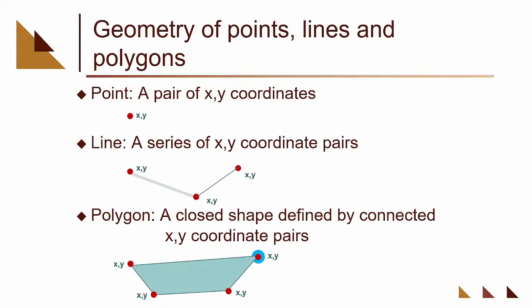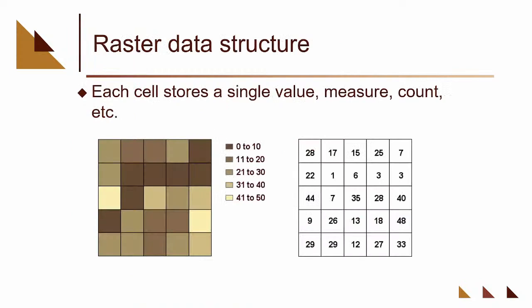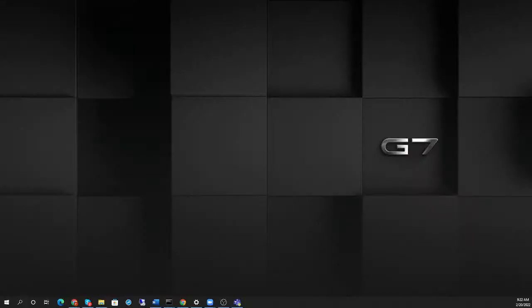We have two major data structures in a GIS. One is a vector data system, which is what we represent everything with — point, line, and polygon. We have a second data structure called a raster data structure. The way it works: imagine you're in a room and someone drops a fishnet over every object in that room. Each one of those little squares of the fishnet represents whatever it's falling on — if it's a table, that little square becomes a table; if it's floor, that square becomes floor.